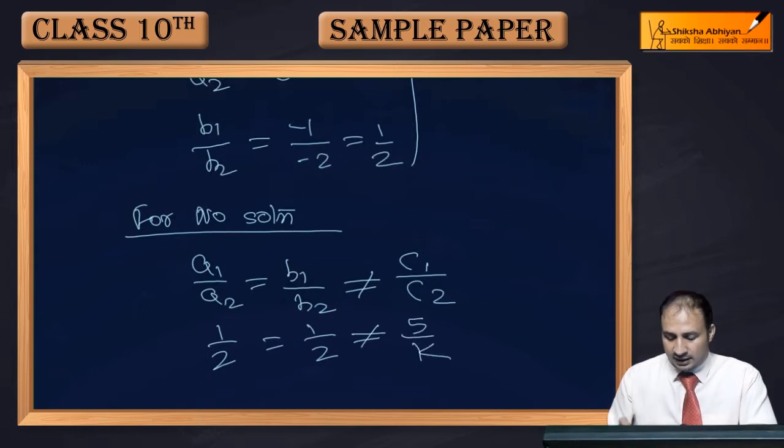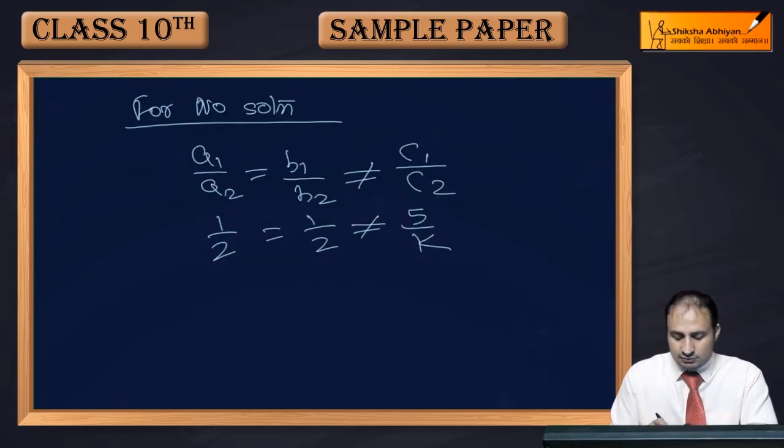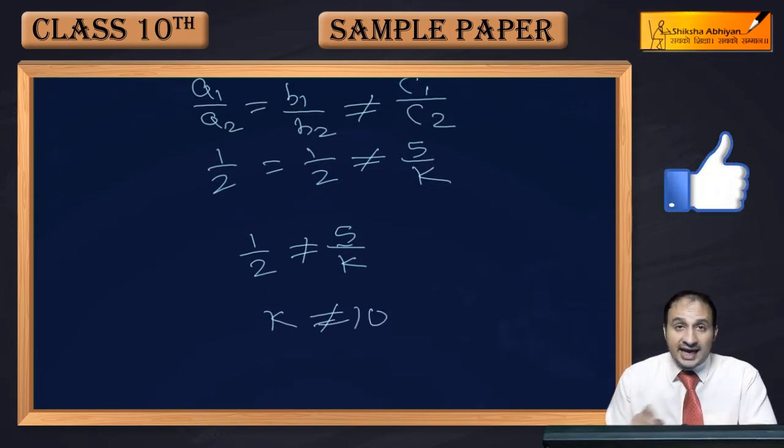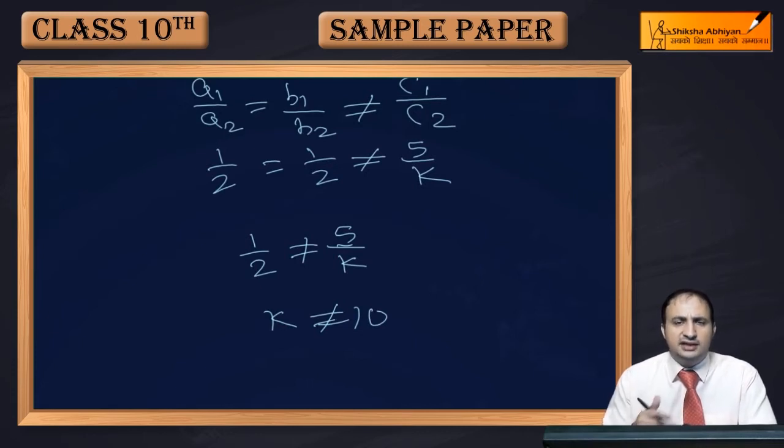1/2 ≠ 5/k. Cross multiplying, k ≠ 10. So k will not be 10, otherwise no solution condition will not apply. So k is not equal to 10 is the final answer.